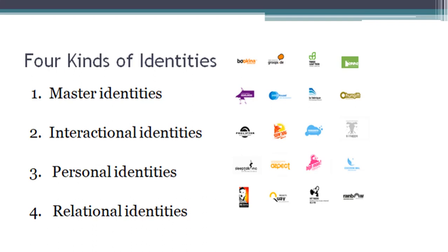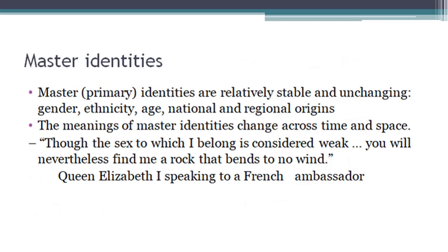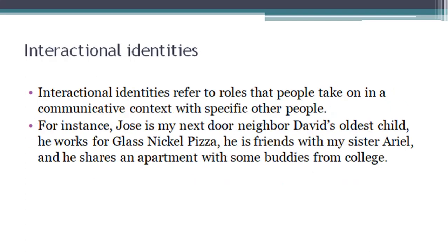Now let's talk about the kinds of identities. Basically there are four types: master, interactional, personal, and relational. Starting with master identities — master identities are the basic ones, which are very fundamental and primary. They are primary because they relate to our origins, from where we belong, our birth. That is natural, that is fixed. For example, if my ethnicity is Pakistani then my culture is Punjabi culture — so this is my master identity.